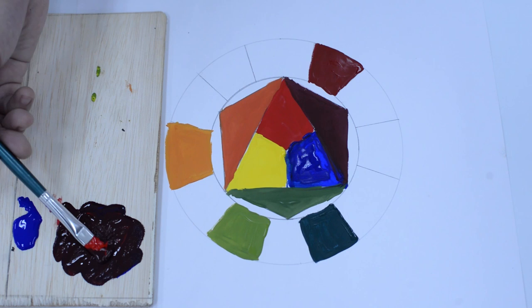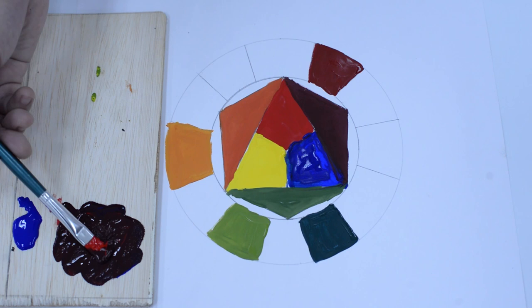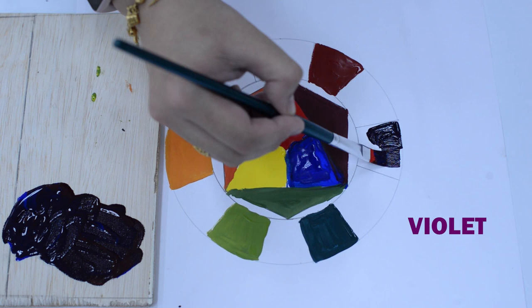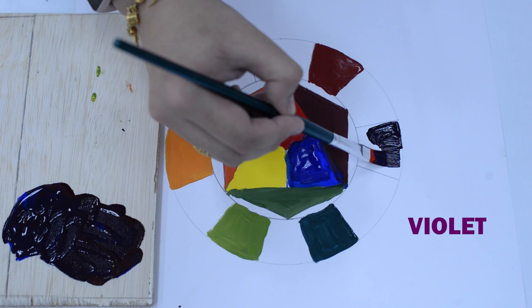Mixing blue and purple will become blue-purple or known as violet. Mixing red and orange color will become red-orange or known as vermillion.